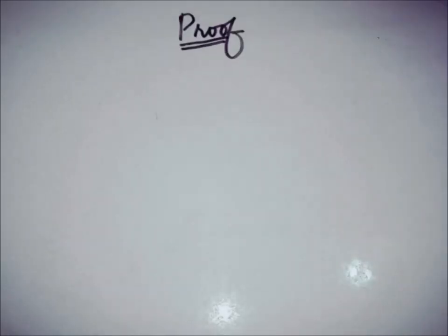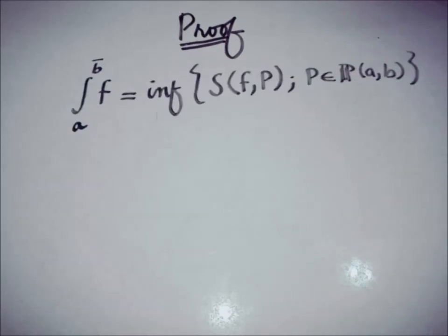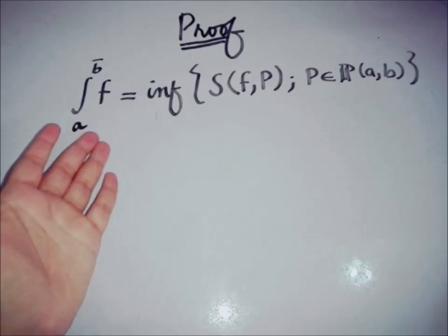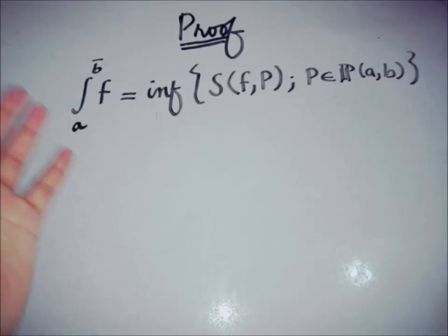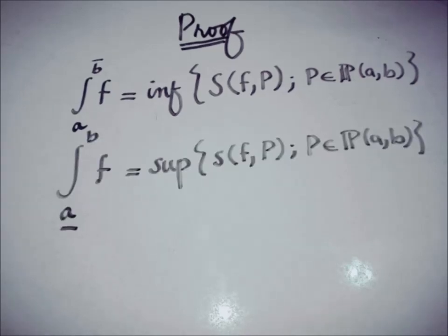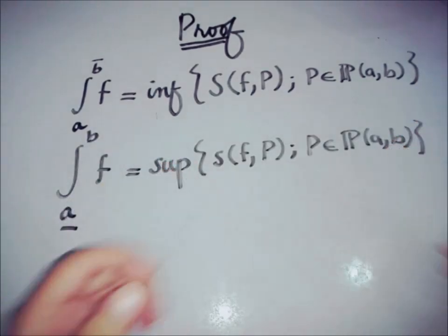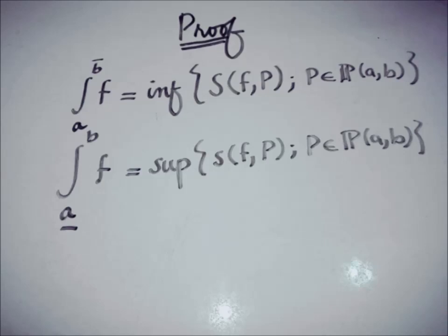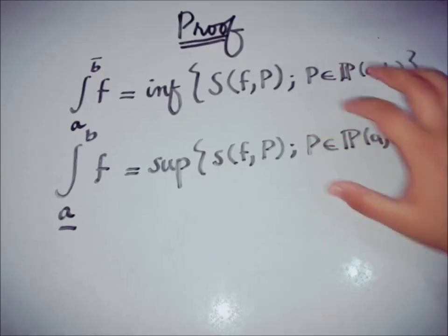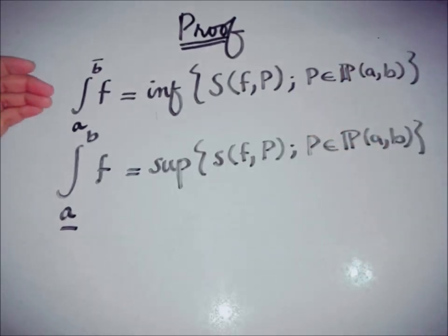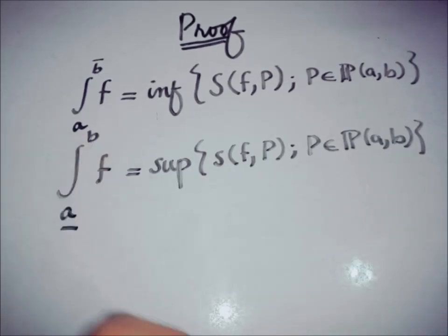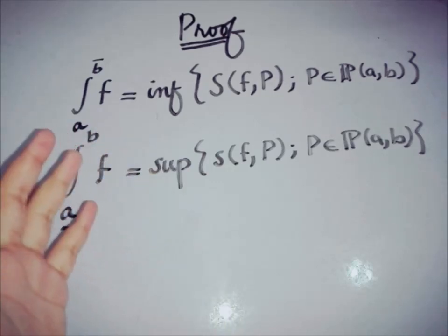Recalling the definition of the upper Riemann integral: we have a bounded function f. The lower Riemann integral is the supremum of all lower Riemann sums over every possible partition. These definitions of the upper and lower Riemann integrals were discussed in the previous video in detail.